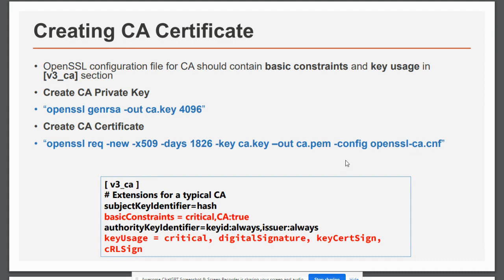An important thing to ensure in the configuration file is that basic constraints are marked as critical and set to 'CA:true', indicating this certificate will be used as a CA certificate. Additionally, key usage must be defined — it should include 'keyCertSign' so it can be used for signing certificates and CRL signing as required.